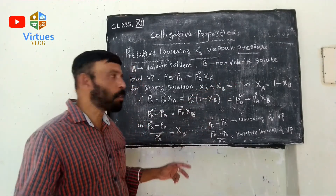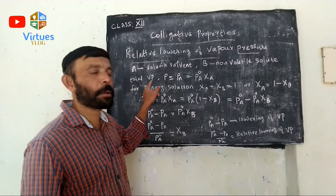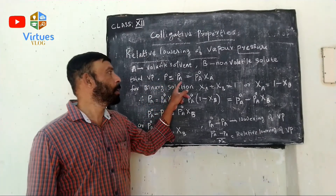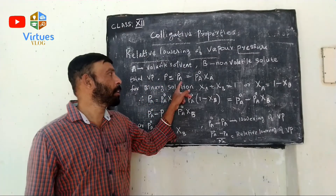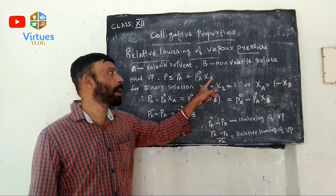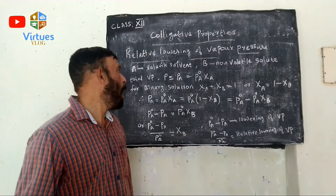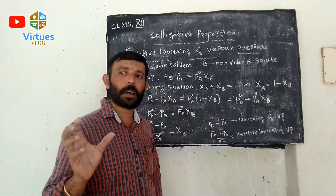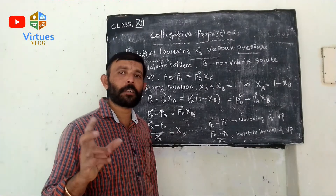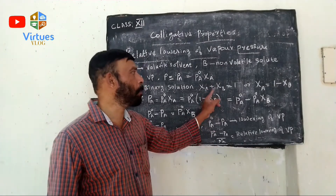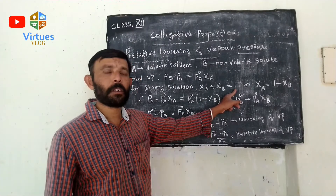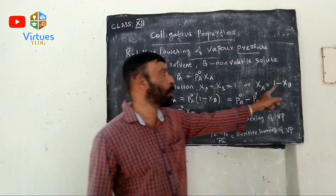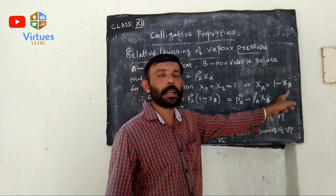As per Raoult's law, we can say total vapor pressure P is equal to PA, which equals P0A multiplied by chi A. For a binary solution, the sum of the mole fractions will be equal to unity — that is, chi A plus chi B equals 1. From this, chi A can be written as 1 minus chi B.